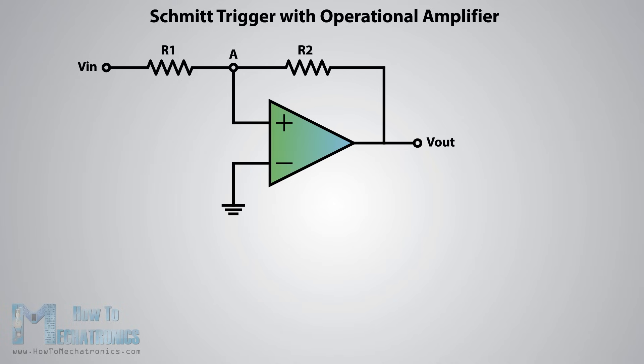Now the output will switch from VCC minus to VCC plus when the voltage at the A node crosses zero volts. That means that by adjusting the values of the resistors, we can set at what value of the VIN input the switch will occur using the following equation.